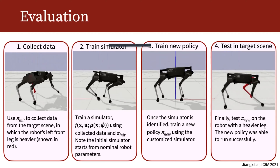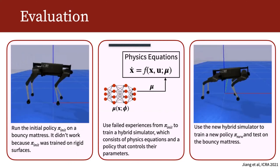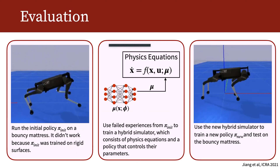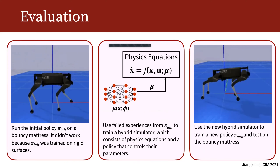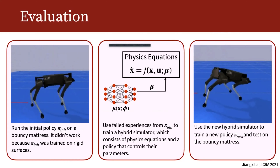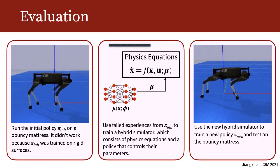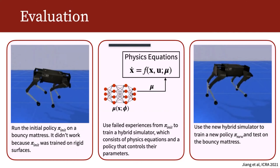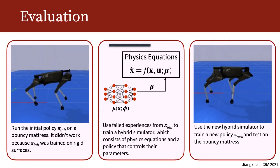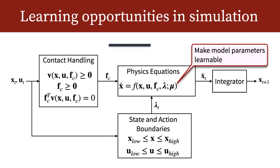In one example, one robot leg is made heavier in the simulated real world — unknown to the simulator — and after training a policy with the hybrid simulator, the new policy was able to walk. In another example, the surface in the real world is elastic like a bouncy mattress. The initial policy fails, but after training the hybrid simulator on those failure experiences, a new policy successfully walks on the bouncy mattress. This is particularly interesting because the physics equations alone can only simulate rigid bodies, yet the hybrid simulator mimics elastic forces without explicitly simulating complex FVM models.